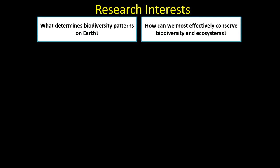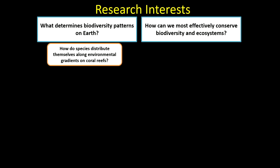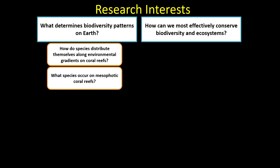Within my broad research themes, I have a number of different questions I'm interested in. Firstly, how do species distribute themselves along environmental gradients? This is a really important question because understanding how species respond along environmental gradients can tell us a lot about their ecology and how communities and ecosystems work and how they might respond to change.